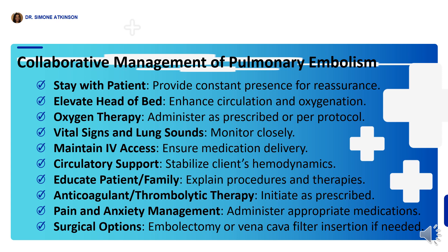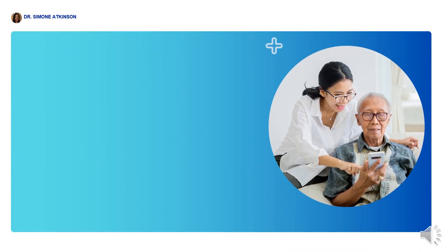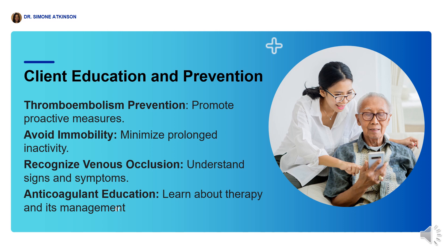Managing pulmonary embolism requires a collaborative approach, underscoring the detection and dedication of the team to provide comprehensive, effective care. To empower clients, focus on prevention of thromboembolism — stress the importance of reducing immobility whenever possible and educate clients on recognizing early signs and symptoms of venous occlusion. Clients need to seek timely intervention, which is crucial for positive outcomes. Provide clear instructions to both client and family regarding the purpose and proper management of anticoagulant therapy.